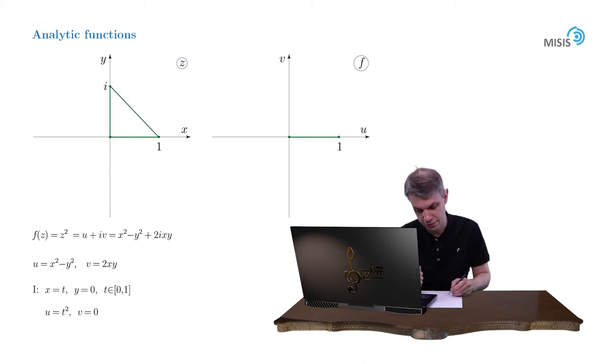Now the vertical segment from 0 to i. Again we introduce a parameterization x equals 0 while y equals t and again t changes from 0 to 1. And now we see that u equals minus t squared while again v equals 0. And therefore the second segment is again transformed into a horizontal segment along u axis but pointing to the left, from 0 to negative 1.